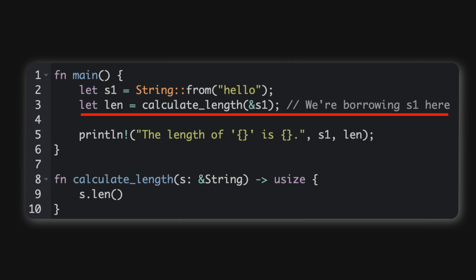Here, ampersand s1 is a reference to s1, meaning we're borrowing it in calculate_length without taking ownership. Once the function is done, s1 is still ours to use. Pretty neat, right?